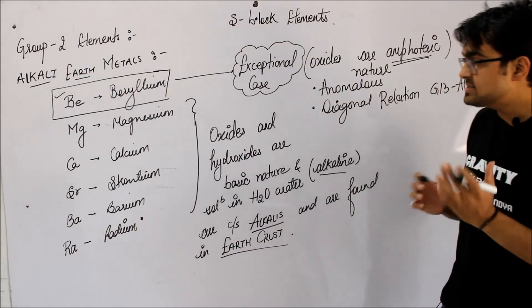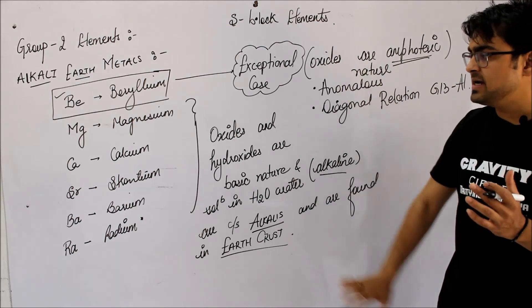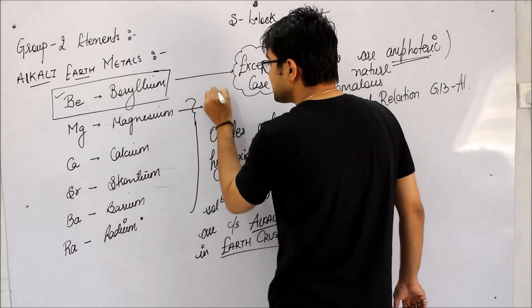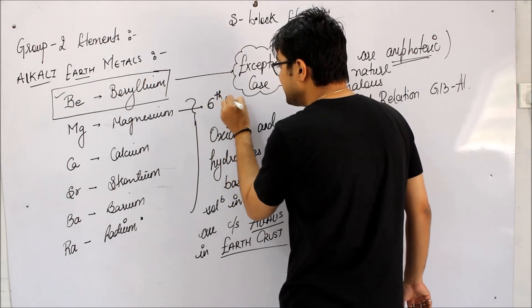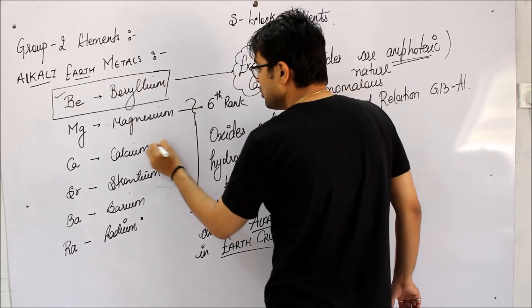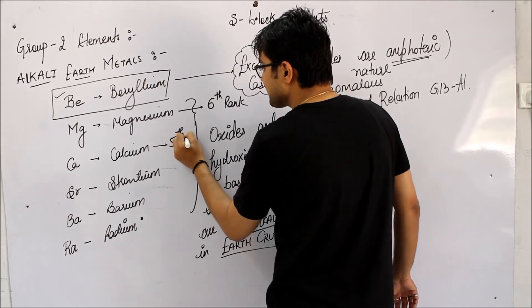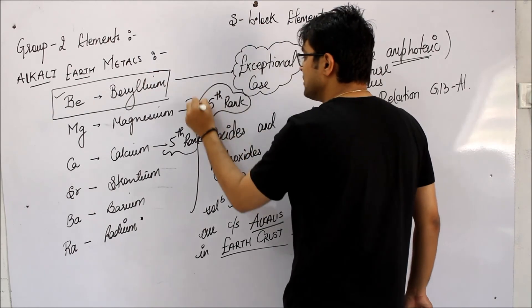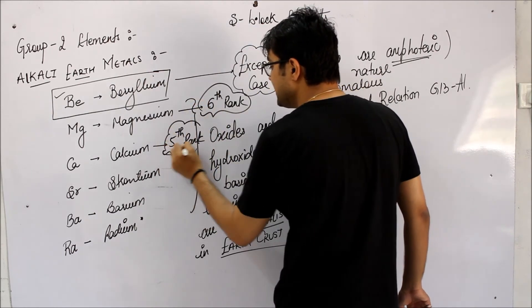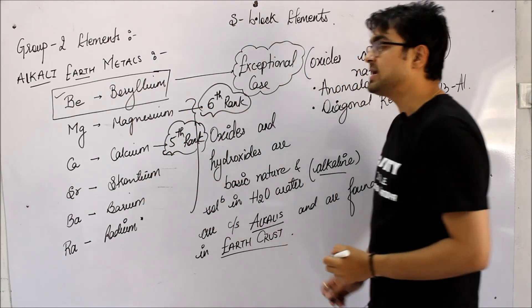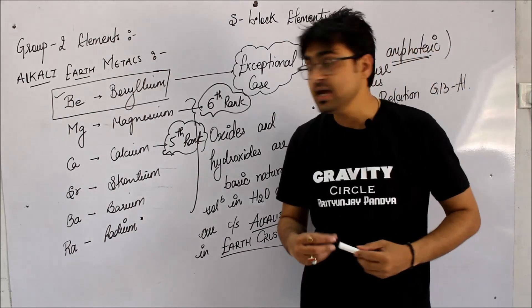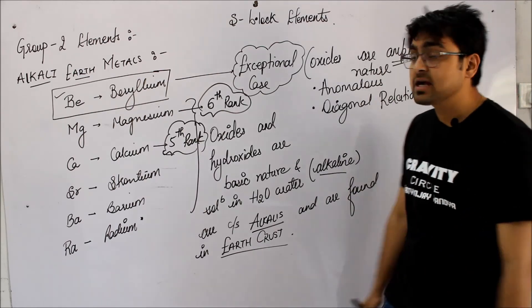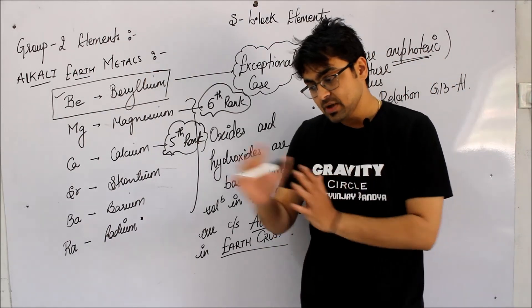If we talk about abundance, everyone's abundance in earth crust is less. But magnesium is found in earth crust at 6th rank - quite good abundance. And calcium's rank is 5th in our earth crust. So basically, calcium and magnesium are found in earth crust in good quantity. The rest have okay quantity. This was a small introduction to Group 2 elements, alkali earth metals.